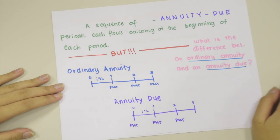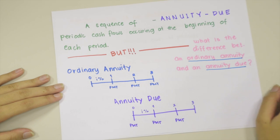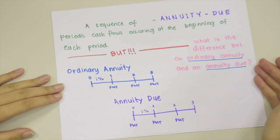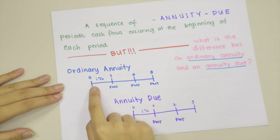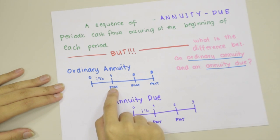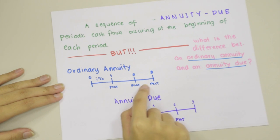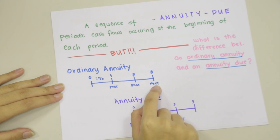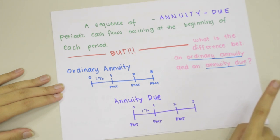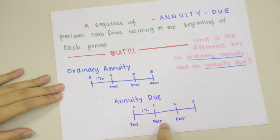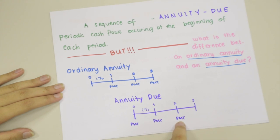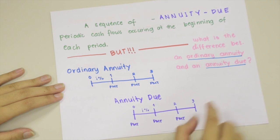What is the difference between an ordinary annuity and an annuity due? In the ordinary annuity, the payment is given at the end of each period, while in annuity due, the payment is given at the beginning of each period.